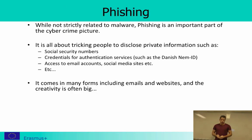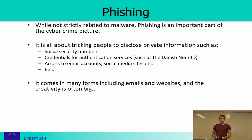Then we have phishing. Phishing is not strictly related to malware, but it is an important part of the overall cybercrime picture. It is about tricking the user to provide different kinds of information — tricking people to disclose private information such as social security numbers, credit card information, credentials for authentication services, access to email accounts, social media sites, and so on. It comes in many forms: emails, websites, and so on.